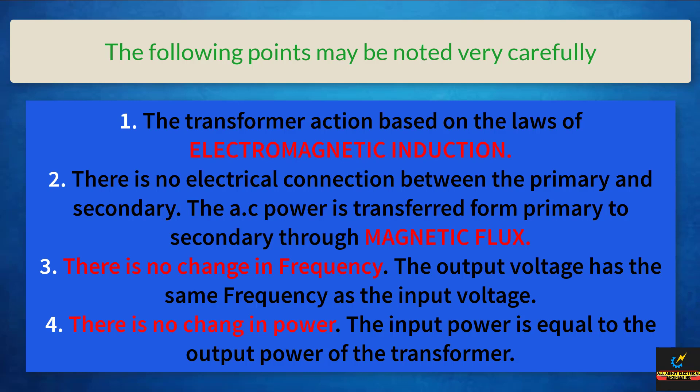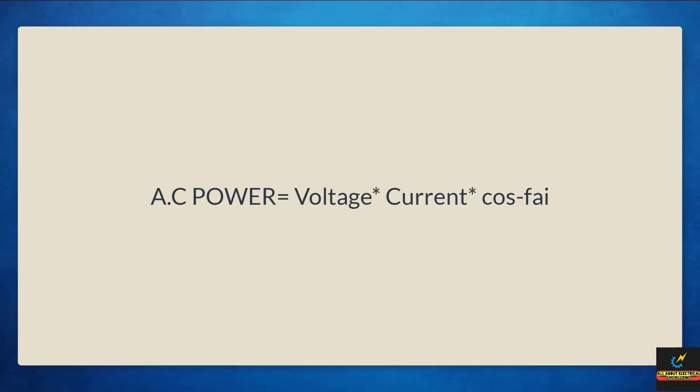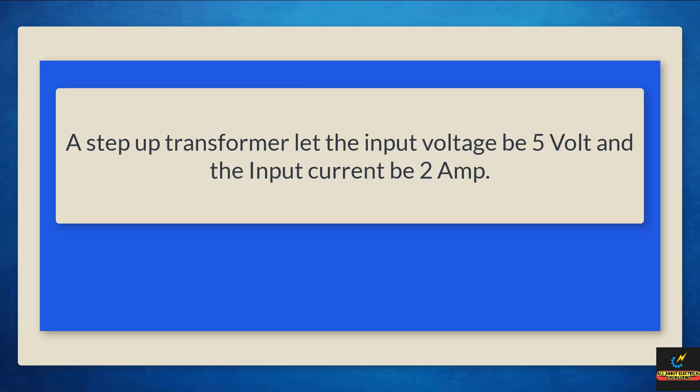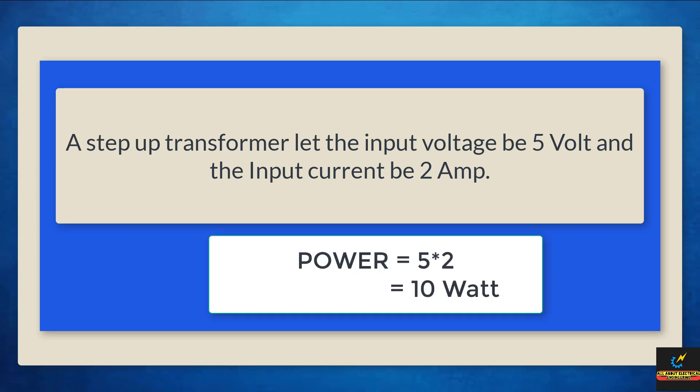That means the input power is equal to the output power of the transformer. We all know that AC power is equal to voltage into current into cos phi. Cos phi is the power factor of the circuit. For ease of calculation, we consider unity power factor. So the power is equal to voltage into current. For example, a step-up transformer, let the input voltage be 5V and the input ampere be 2A. So the power is 10W.